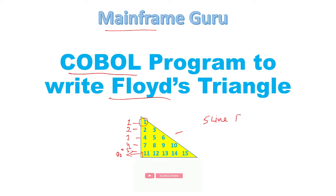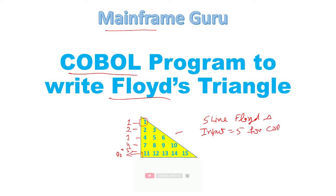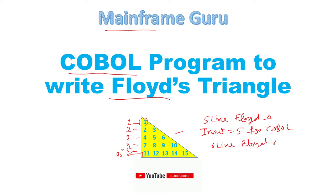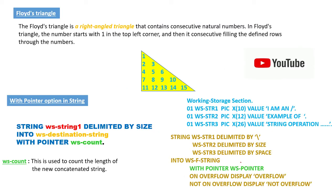For this COBOL program we are using input as five to write a five-line fluid triangle. If you want to use a six-line fluid triangle, you would use input as six.